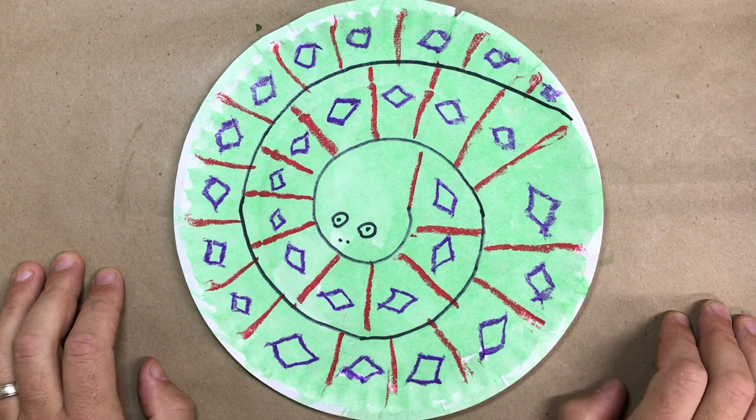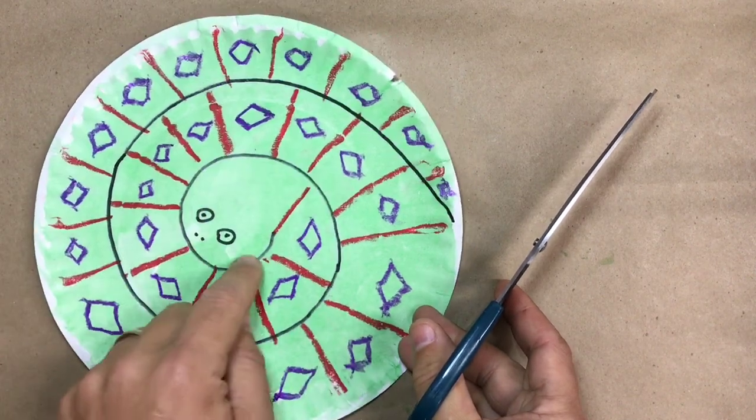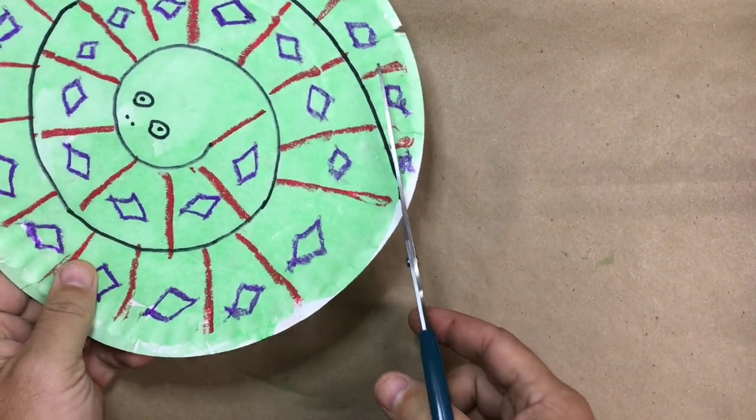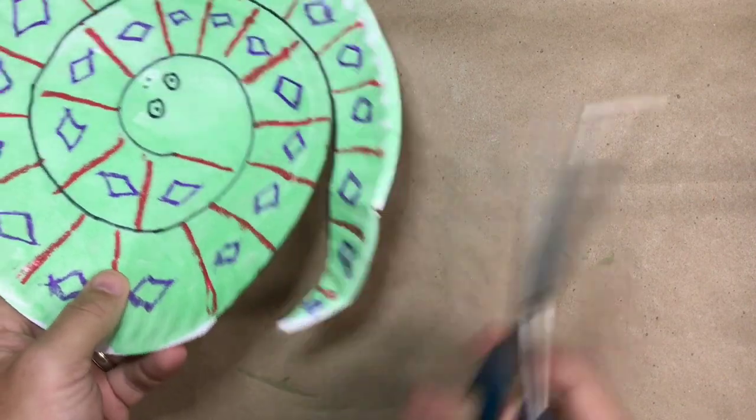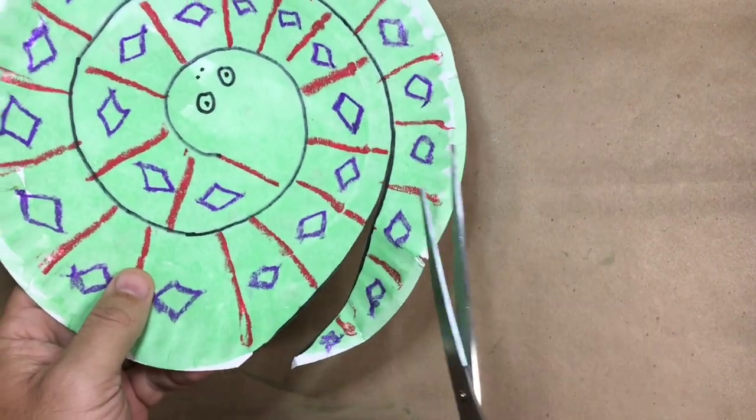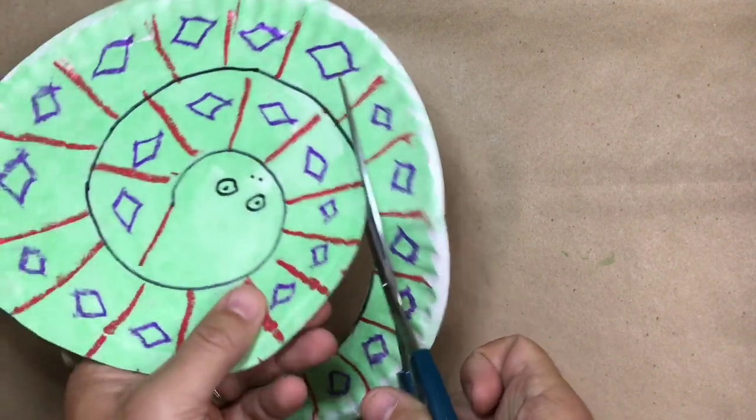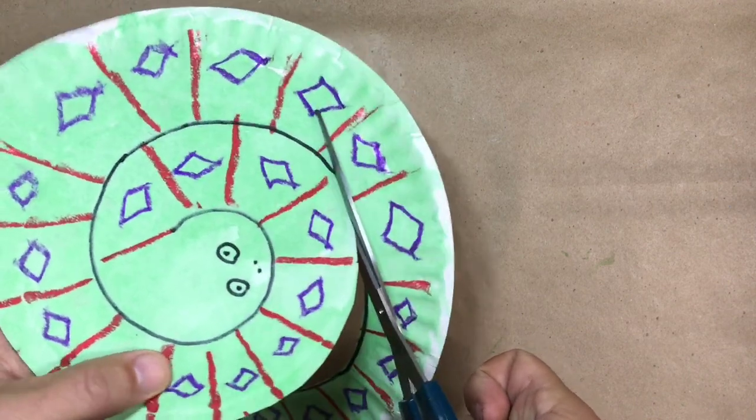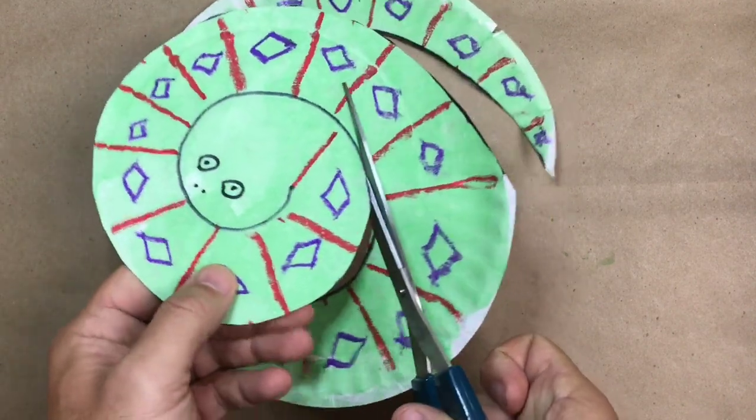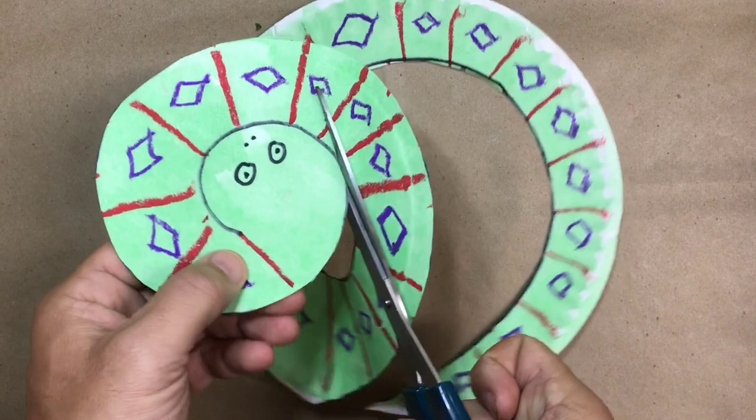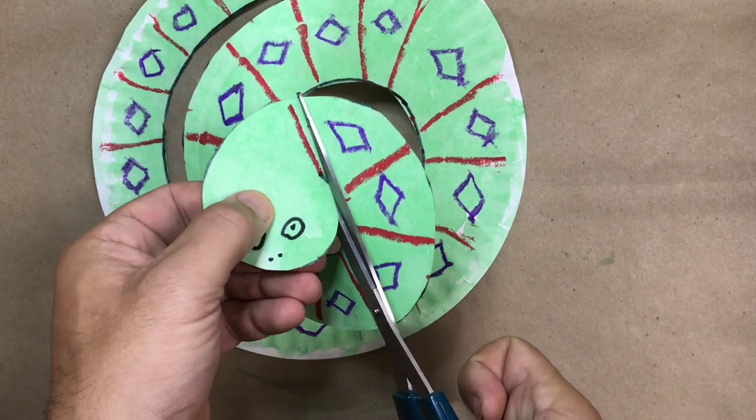Okay once your snake is dry you can take some scissors and you're going to cut all along this line the swirl that we drew. So I'll start at the tail. Stay as close as you can to that line and as I cut you can see it's separating his tail from his body. So I'll continue to spin the plate and cut around that line. His body keeps getting longer and longer until I get to the center where his head is. I go all the way to the end of that swirl line that I drew and stop.